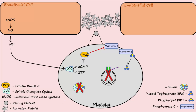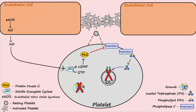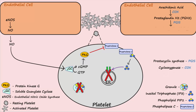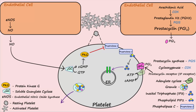A second mechanism utilized by endothelial cells to inhibit platelet activation is the production and secretion of a signaling molecule called prostacycline, abbreviated PGI2. Prostacycline is the ligand for a G protein coupled receptor on the surface of the platelet. Activation of this GPCR by prostacycline leads to the production of cyclic AMP. Cyclic AMP then activates a calcium pump on the surface of the platelet, which actively pumps calcium out of the platelet. Thus, increased calcium efflux reduces calcium within the platelets, which inhibits granule release.